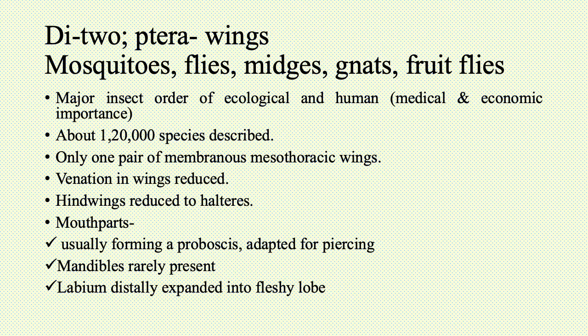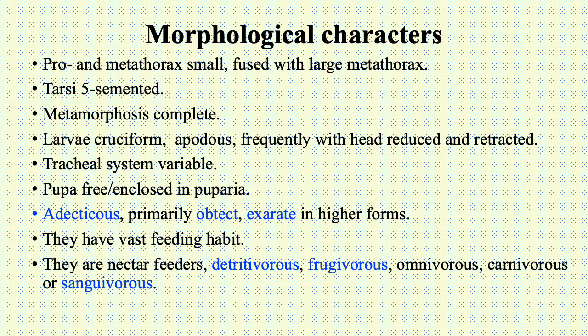Mouth parts are usually forming a proboscis, which is adapted for piercing. Mandibles are rarely present. Labium is distally expanded into a fleshy lobe — the labium is also known as the lower lip. Pro- and metathorax are small in dipterans and are fused with the mesothorax.